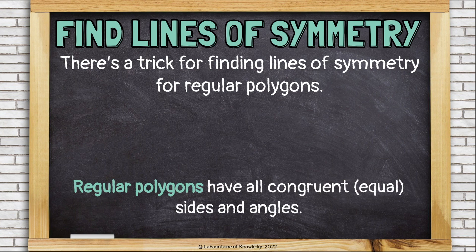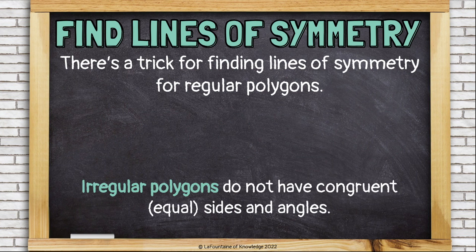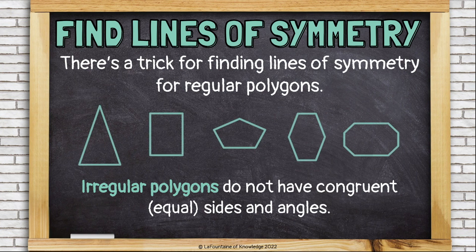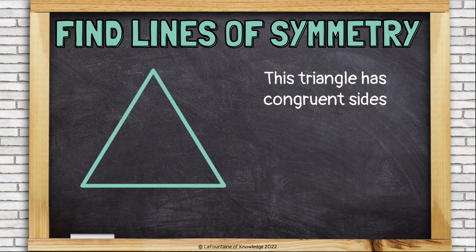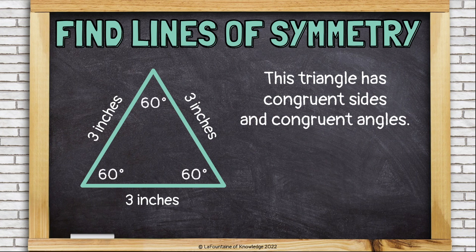Irregular polygons do not have congruent or equal sides and angles. This triangle has congruent sides — all three of its sides measure three inches long, so they are congruent, which just means equal. It also has congruent angles — all of the angles measure 60 degrees.